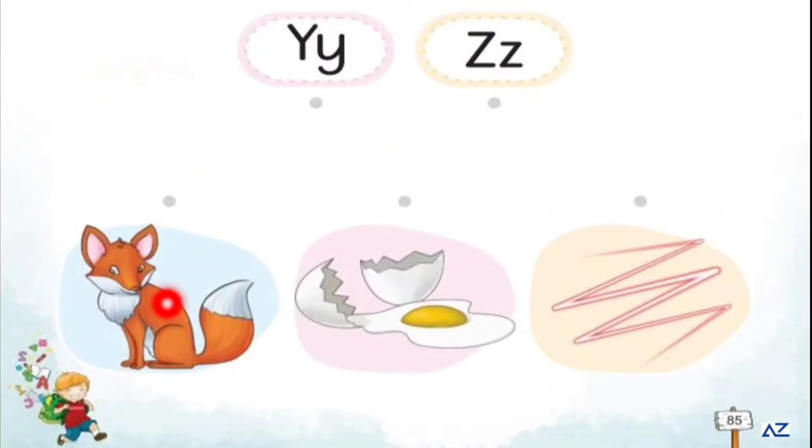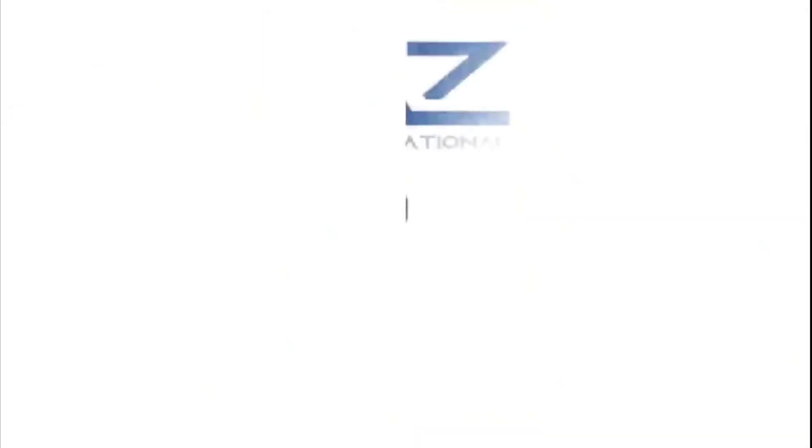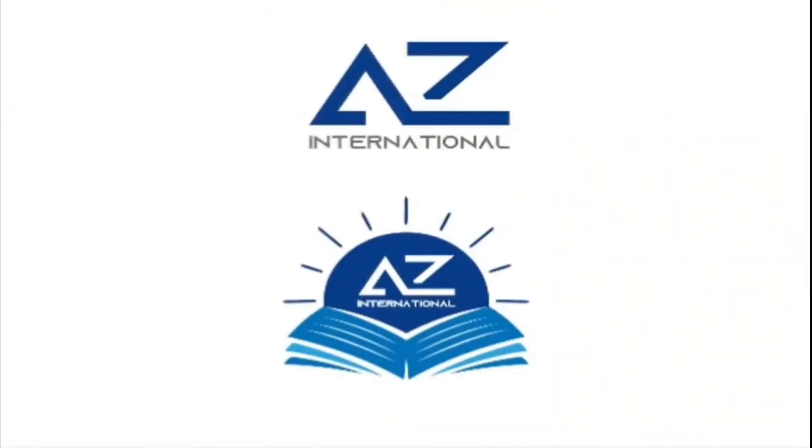The next is fox. Fox starts with F. Fox, F - fox. Y - yolk, Z - zigzag.